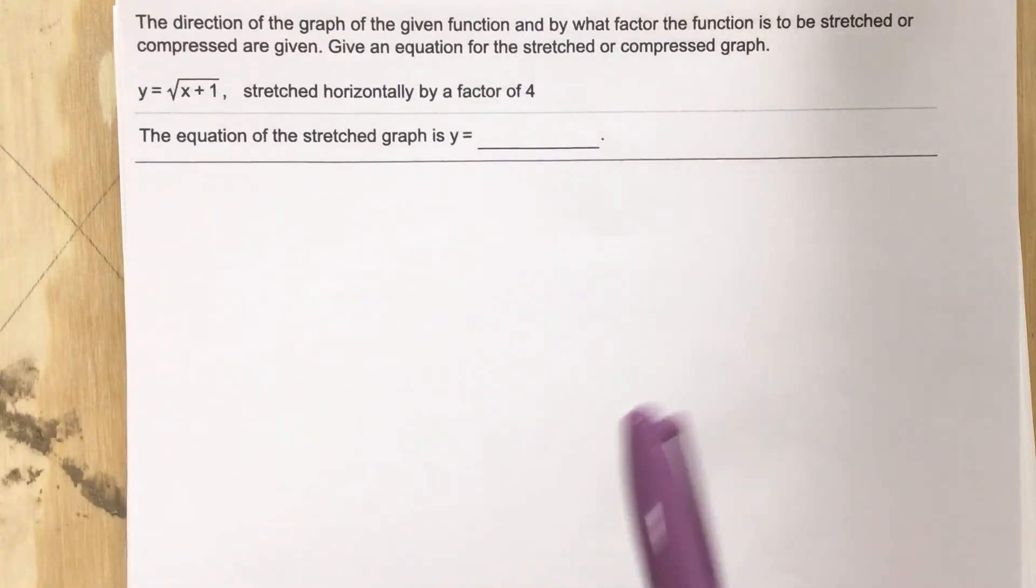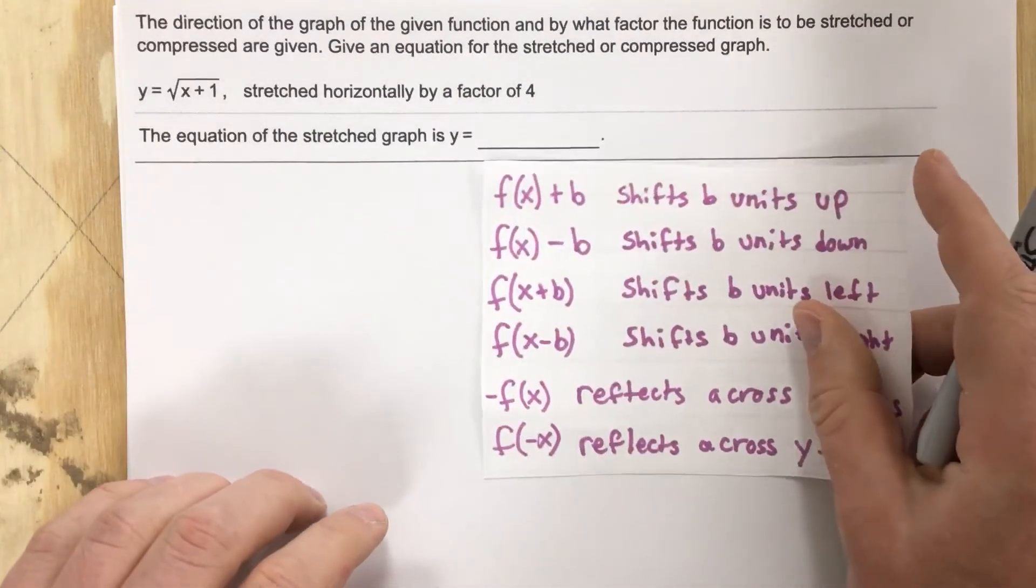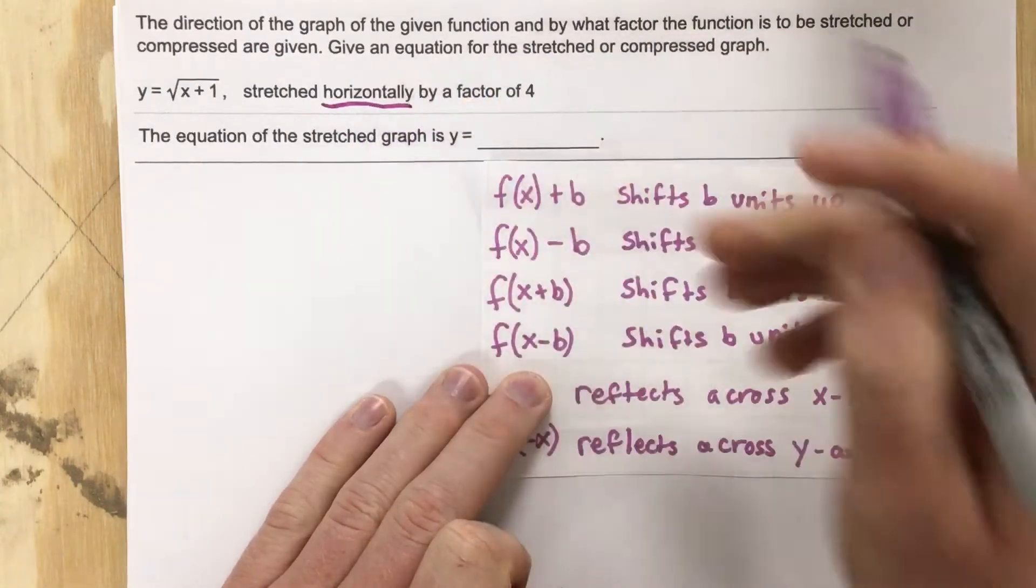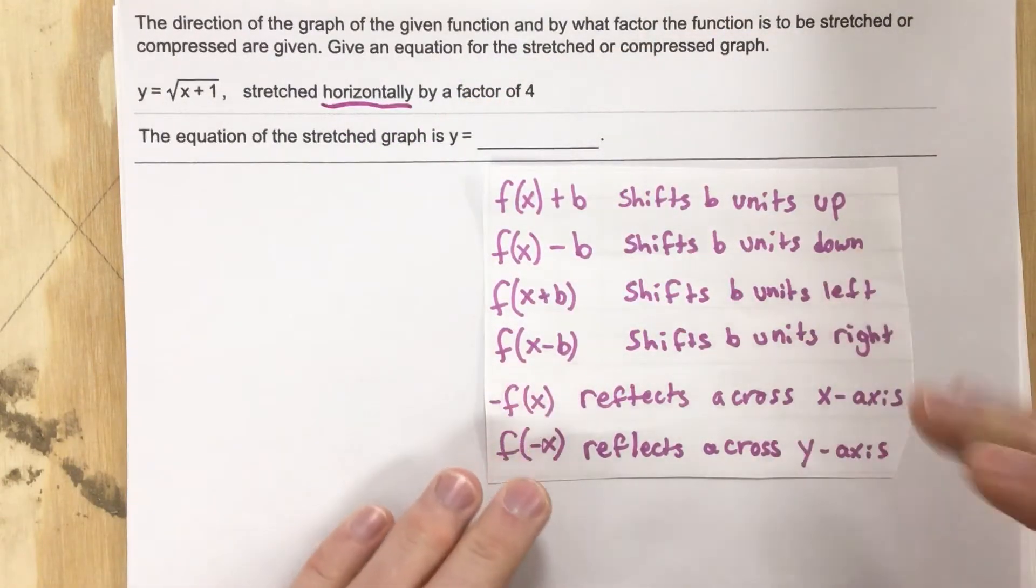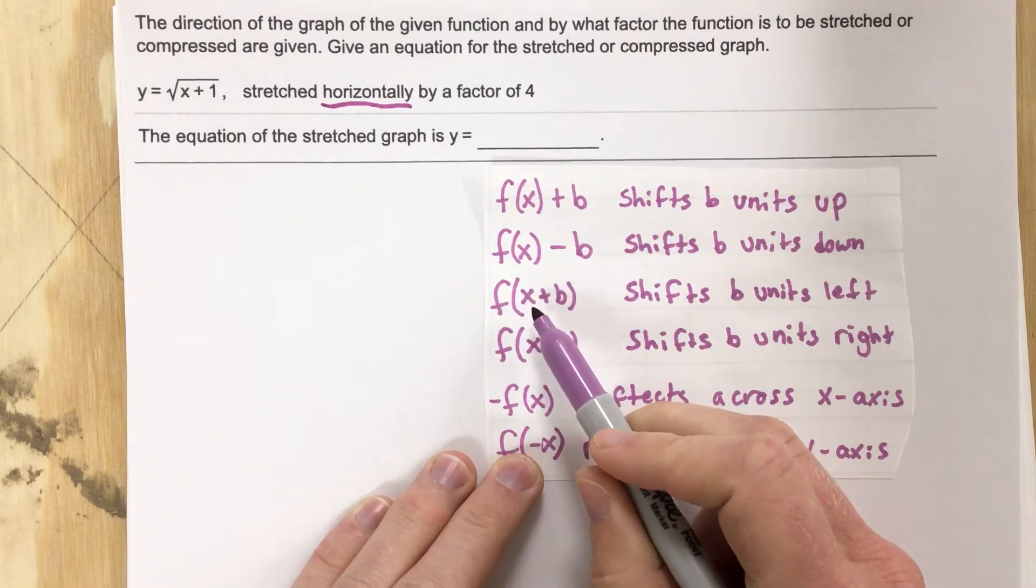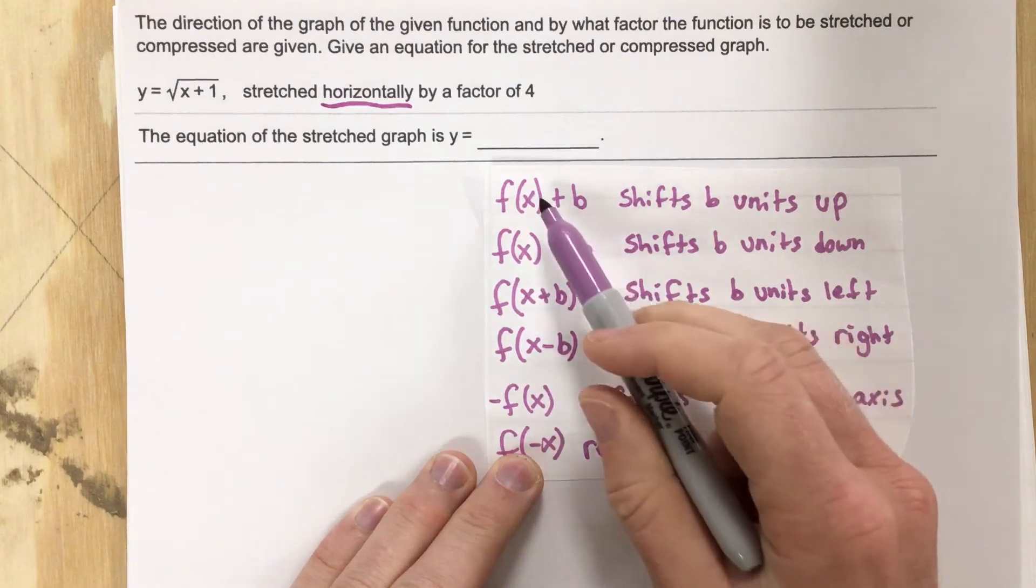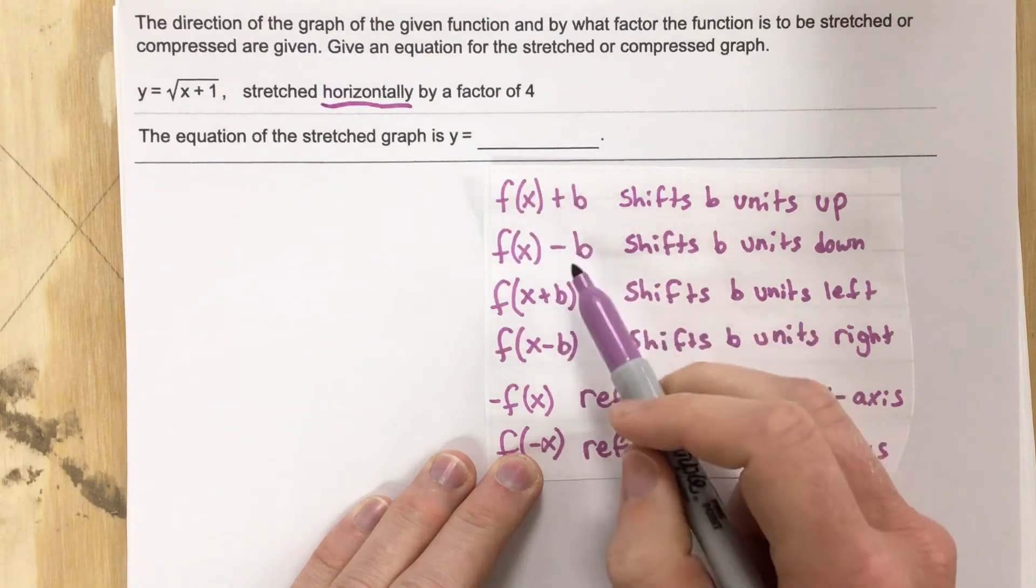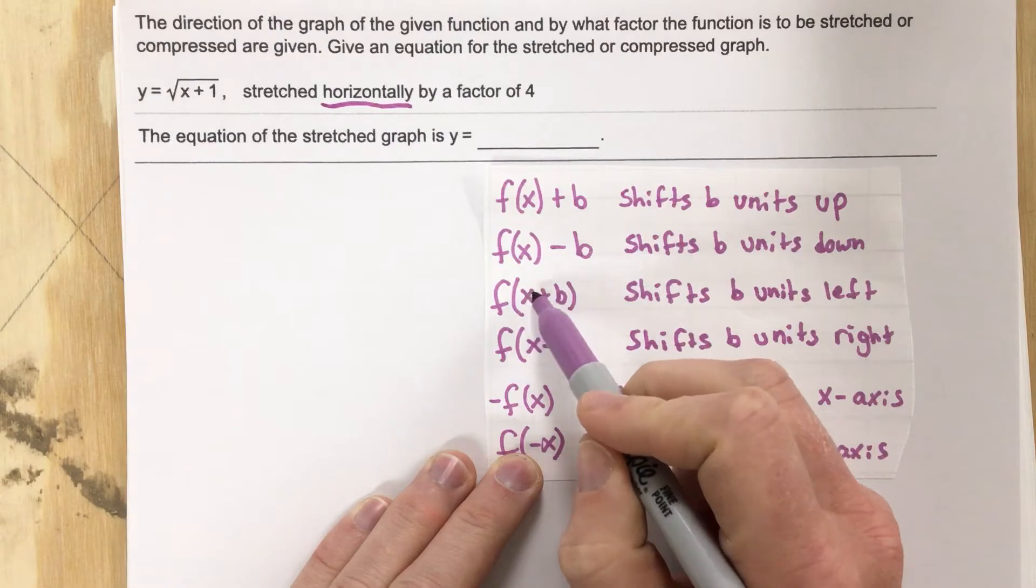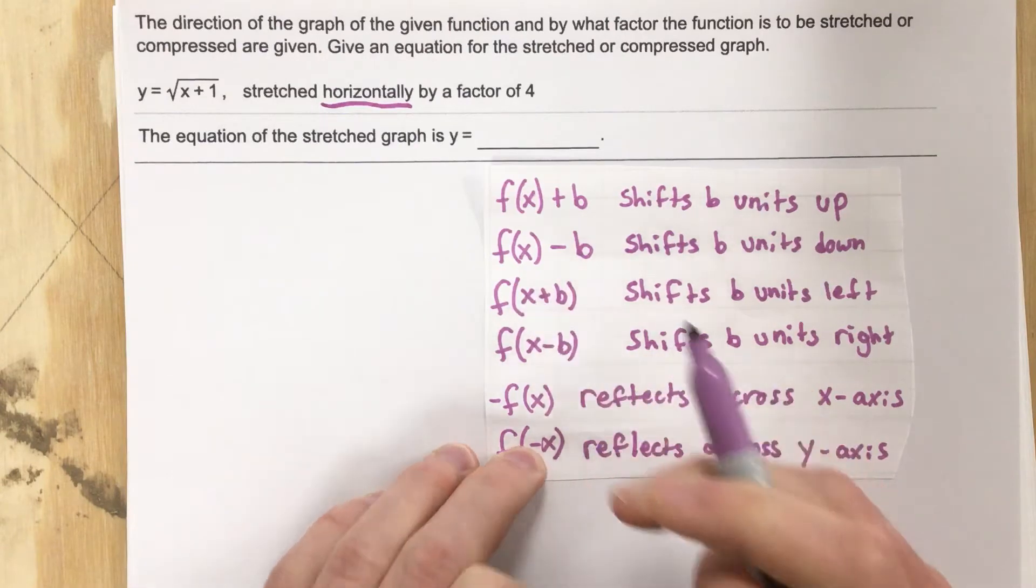So just like the previous problem, anytime they talk about horizontally, they're saying they want us to change the function where the independent variable is. They're not saying to take the function and add or subtract to it or multiply or divide to it. They're saying specifically affect the independent variable.